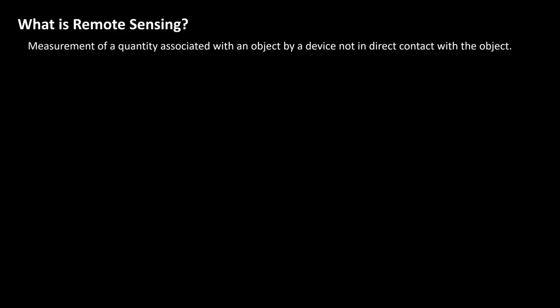So first, let's get everybody on the same page — what do we mean when we say remote sensing? If you take the dictionary definition, remote sensing is the measurement of a quantity associated with an object by a device not in direct contact with the object. That's a long-winded way of saying that you're observing some property of a system without actually being in physical contact with that system.